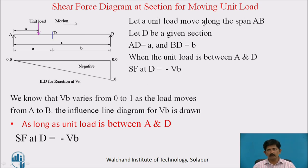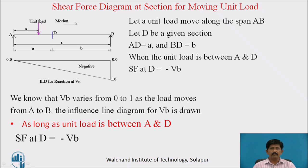Shear force diagram at a section for a moving unit load. When a unit load moves from A to B, what will be the shear force? Let a unit load move from span A to B and D be the section where we have to find the shear force. The AD portion has length A and DB portion has length B. When the unit load is between A and D, the shear force at section D is found by considering the right side of the section — only the upward reaction VB is there. But right of the section, downward is positive and upward is negative, so I draw this reaction downwards, giving minus VB.